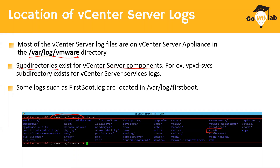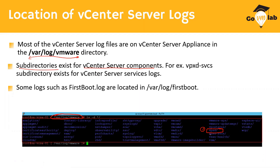vpxd is one of the key services of your vCenter Server, and it should be your starting point whenever you are trying to debug any issues specific to vCenter Server — that has to be the very first log you look at. The next folder is vpxd-svcs, which is all about your vCenter Server components. If you go further into that directory, you will find all of the other vCenter Server components and their relevant logs.